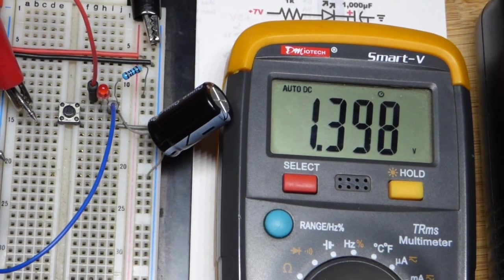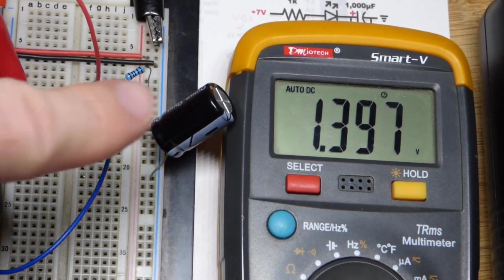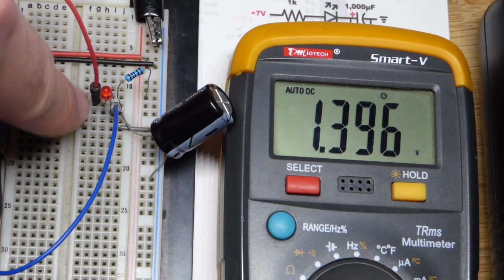Again, current does kind of trickle through at lower voltages and slowly charge the capacitor a little bit more.